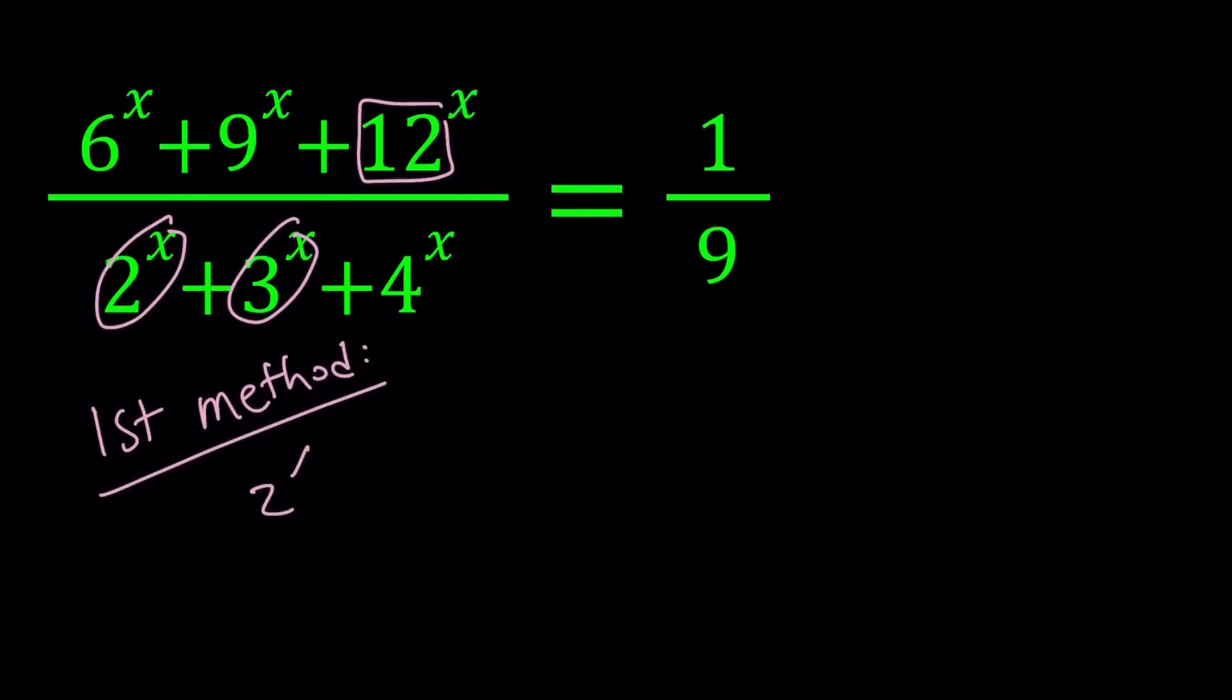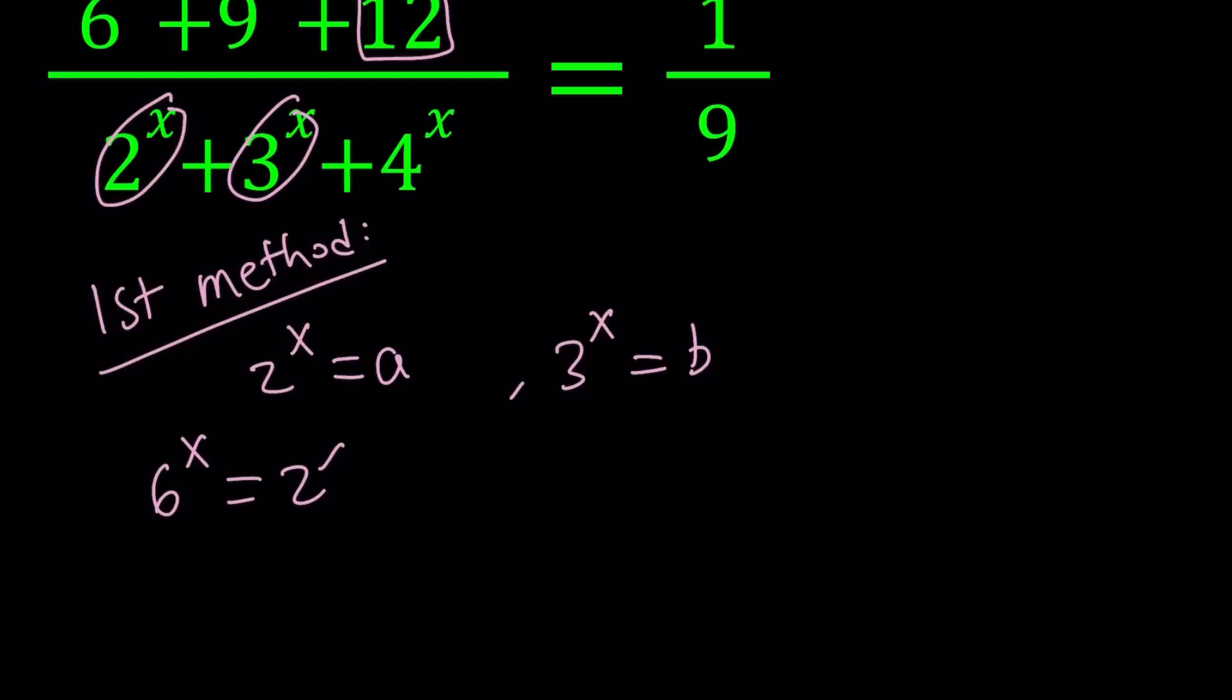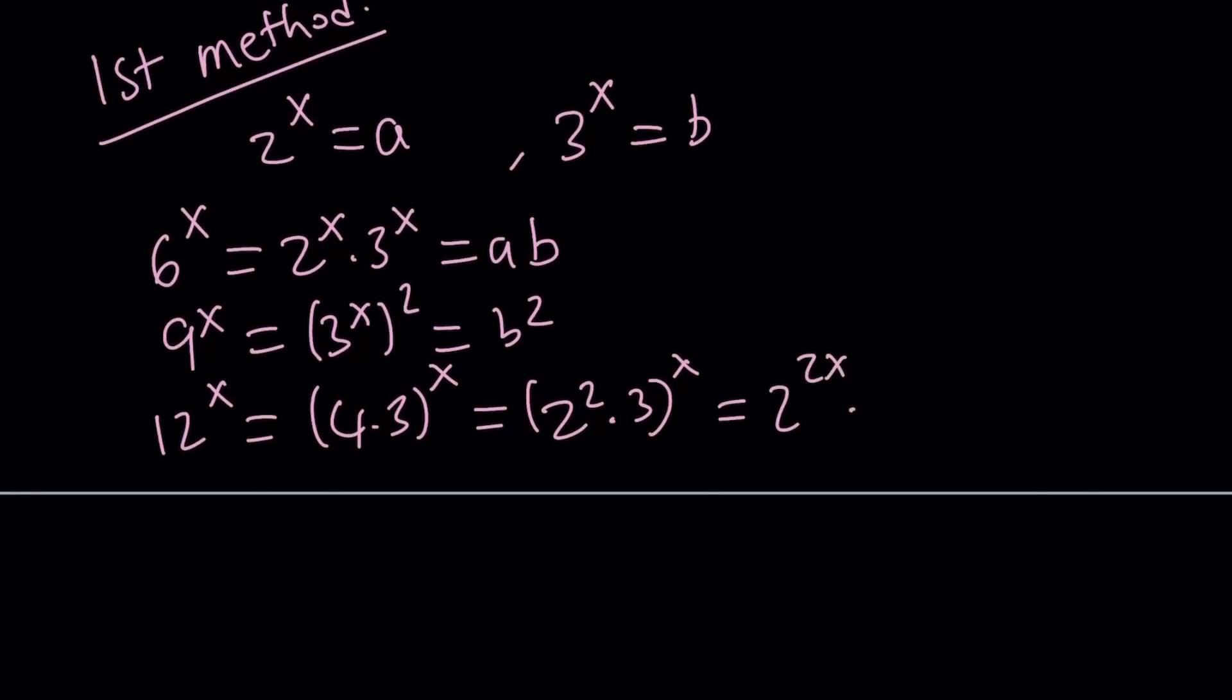Set 2 to the x equals a and 3 to the x equals b. And then from here we're going to do the following. 6 to the x is going to be 2 to the x times 3 to the x which is ab. 9 to the x is just 3 to the x squared which is b squared. And 12 to the x, 12 can be written as 4 times 3 to the x and 4 is basically 2 squared. And then this becomes 2 to the 2x times 3 to the x. And 2 to the power 2x can be written as 2 to the power x squared times 3 to the x. And since we call 2 to the x a this will be a squared times b.